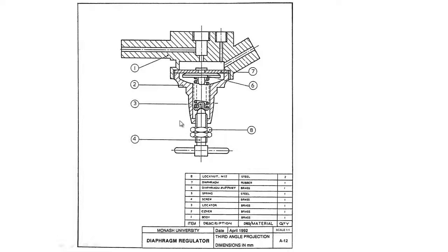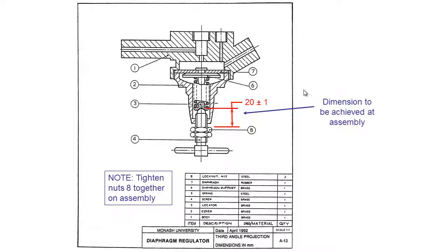We might have a requirement where we want the distance from our two nuts to be 20mm plus or minus a millimeter. Important to note that this is a dimension that is only required in the assembly drawing because it's not something specific to a part, so it's not going to be in any of the detailed drawings. It's a dimension we need to know for when we're putting our device together. We would also include a note with this, telling the person assembling it what to do: tighten nuts eight together on the assembly so they're threading against each other so they lock into that position.